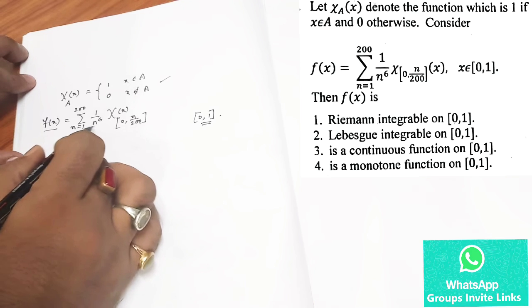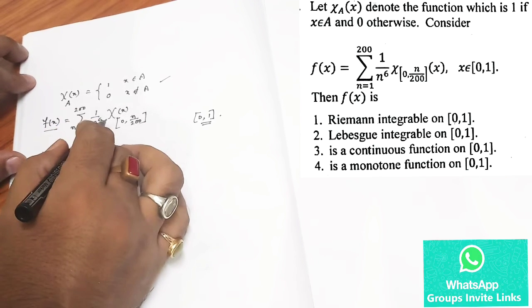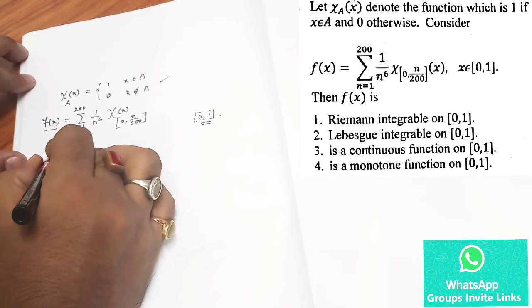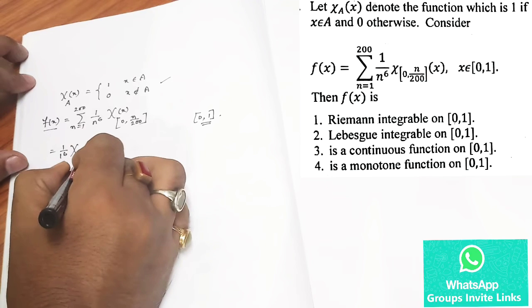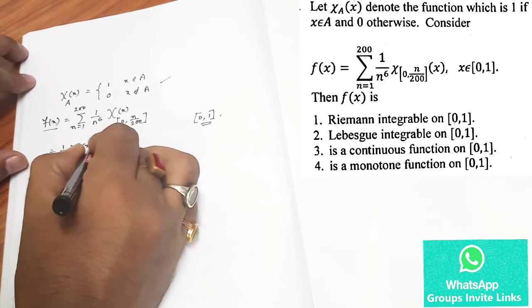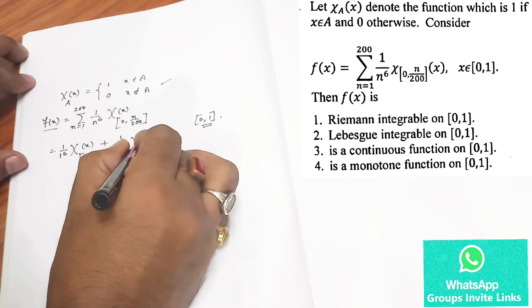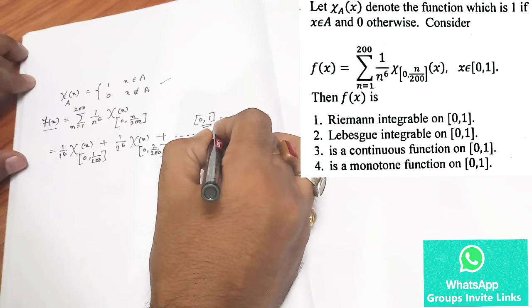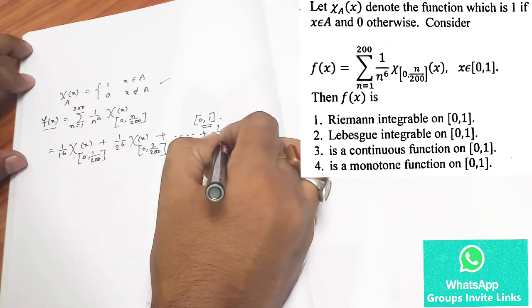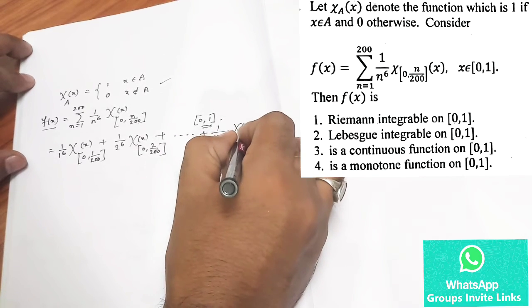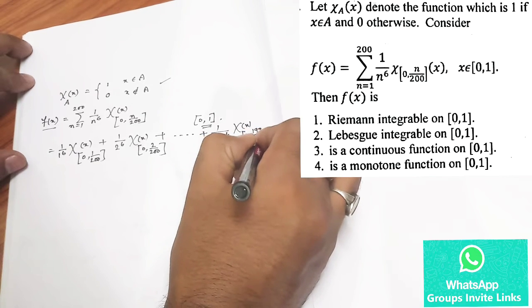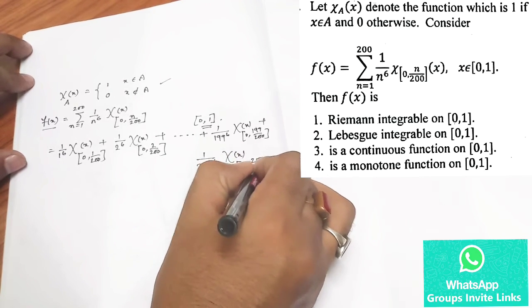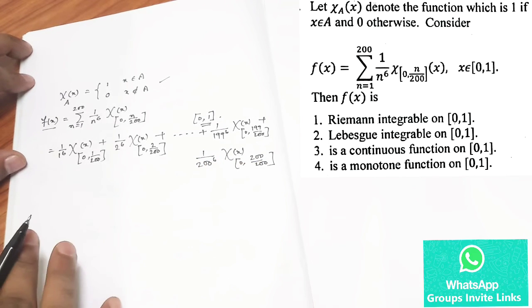It is a giant looking function. So try to write it explicitly and then you will get the flavor. How to process this kind of problem? Just write it explicitly: 1 by 1 to the power 6, χ of (0, 1/200) plus 1 by 2 to the power 6, χ of (0, 2/200) plus 1 by 3 to the power 6, and so on.